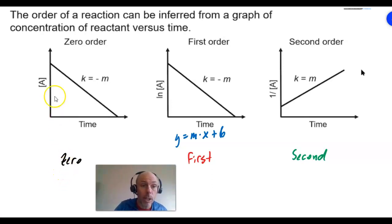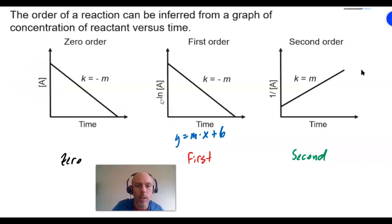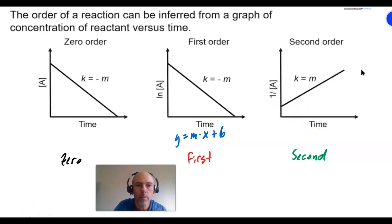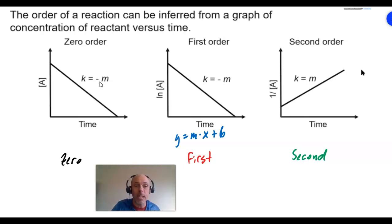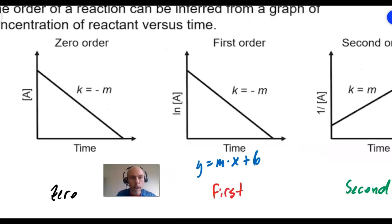Here is a graphic depicting that. For a zero order reaction, concentration versus time is linear - remember a symbol in brackets represents concentration. For first order, the natural log of concentration against time is linear. For second order, the inverse of concentration versus time is linear. Next we're going to prove why the rate law constants are equal to the slopes of these lines or the negative slopes, and then write the integrated rate laws - the y equals mx plus b versions of these graphs.